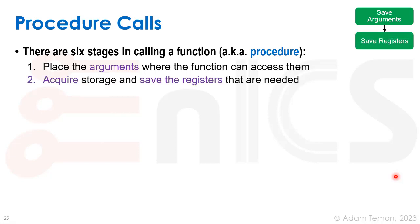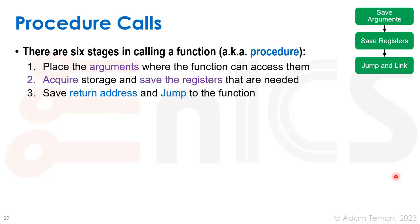Then we're going to acquire storage and save registers that are needed, because certain registers will need to be saved in order to replenish them after running the procedure. Third, we're going to save the return address and jump to the function. We need to save the place that we are going to continue running after finishing the procedure, and then change our PC to store the address of the function itself.